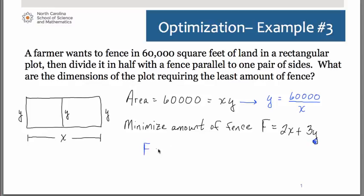So now we have a new primary equation. f equals 2x plus 3 times 60,000 over x. And we'll go ahead and simplify that. So that gives us 2x plus 180,000 over x. And that becomes the primary equation that we are going to seek to minimize.